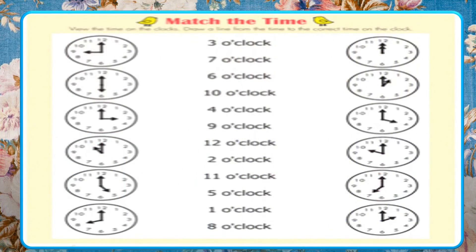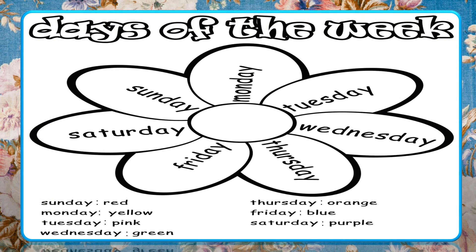In this first worksheet, you have to match the time. You have to look at the clock and match it with the correct time. Worksheet number two is about Days of the Week — days of the week are written in a flower, and according to the color code, you have to color the petals.